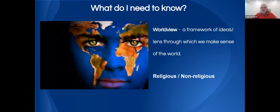The first thing to understand is the notion of a worldview — the lens through which we look at the world. A religious person affiliated with a religious tradition makes decisions based on their religious background. A non-religious person operates differently. We have two worldviews: religious and non-religious. For example, someone with a non-religious worldview may not celebrate Easter, whereas a religious person might gather their whole family together at Easter time.